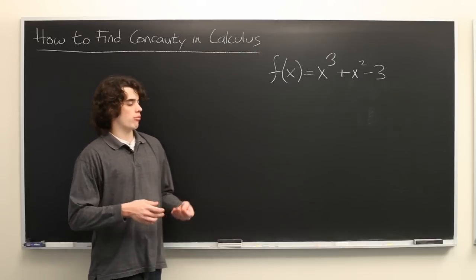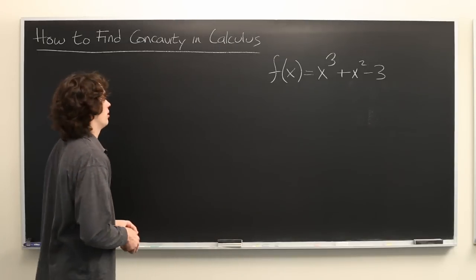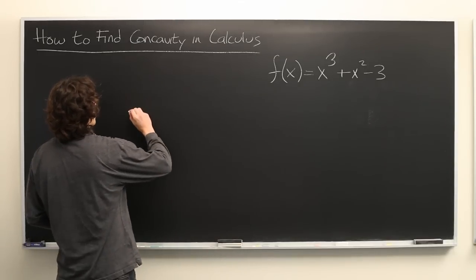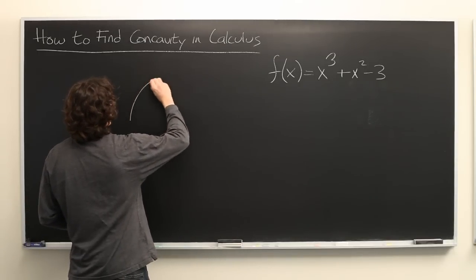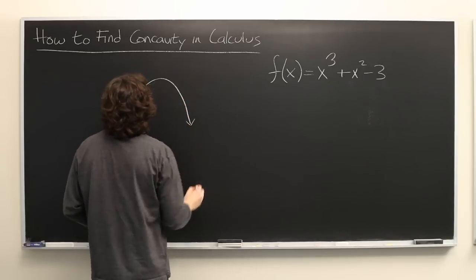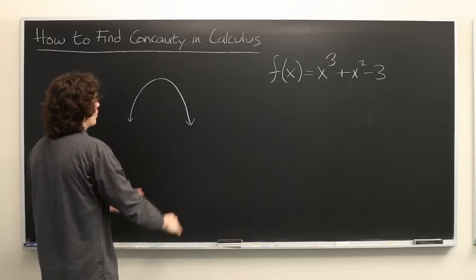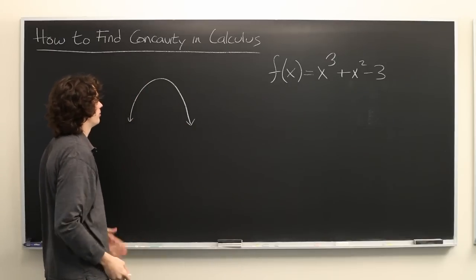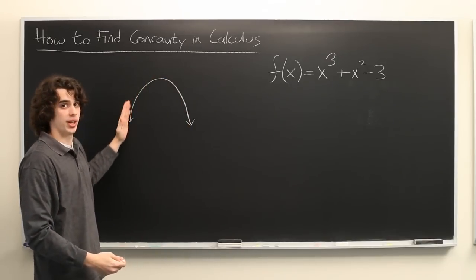So before we begin, let's go over what concavity means in a visual sense. When something is concave down, it takes this general shape. As it moves to the left, it goes down, and it moves to the right and goes down. You can think of it as an upside down U.